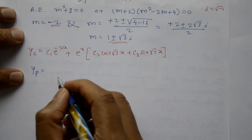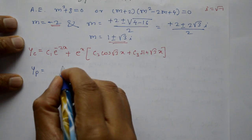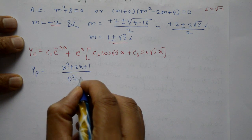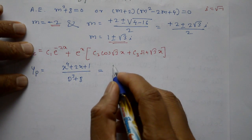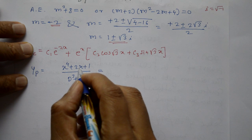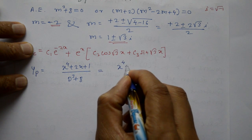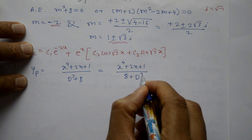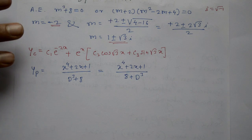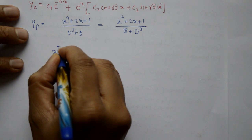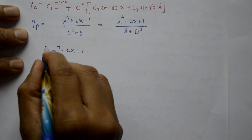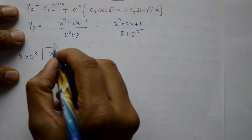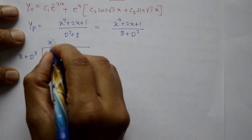Now find the particular integral: phi(x) = x⁴ + 2x + 1 and f(D) = D³ + 8. Arrange numerator in descending order: x⁴ + 2x + 1, and denominator in ascending powers of D: (8 + D³). Using the division method, divide x⁴ + 2x + 1 by (8 + D³). First quotient term: x⁴ / 8.